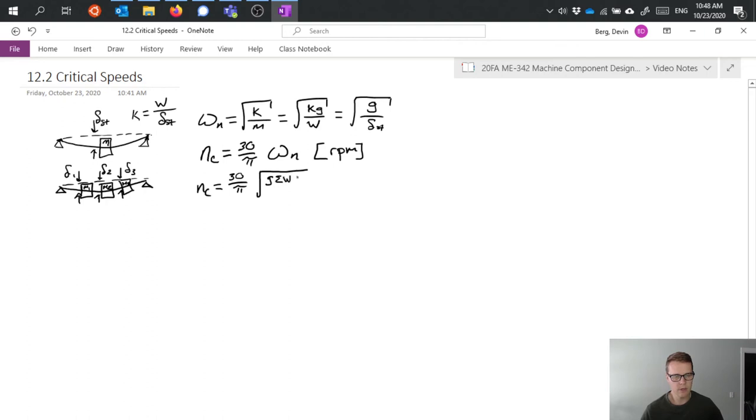So we can write this as g times the summation of w delta, so this is all the little components of delta and w, divided by the summation of w delta squared.